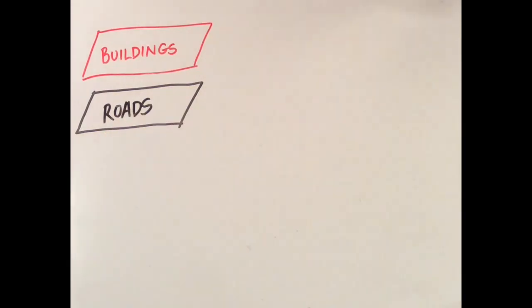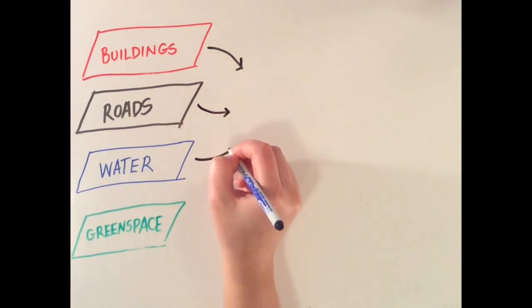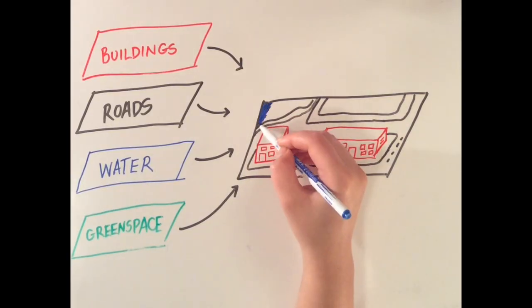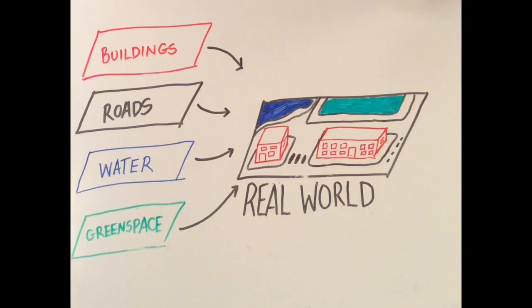GIS platforms are incredibly useful because they allow the user to overlay multiple layers of data and understand both how the layers relate to each other and how each of them exists in space to get a fuller picture of phenomena in the real world.